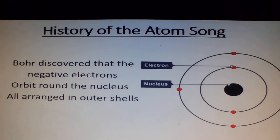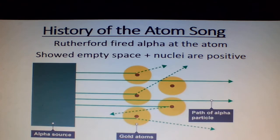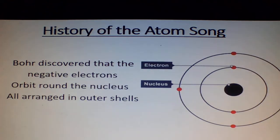Bohr arranged it out as shells. Stolter discovered there are atoms. Dobson's plum pudding model was composed. Rutherford fired alpha at the atom, so empty space and nuclei are positive. Bohr discovered that the negative electrons orbit round the nucleus, arranged out as shells.